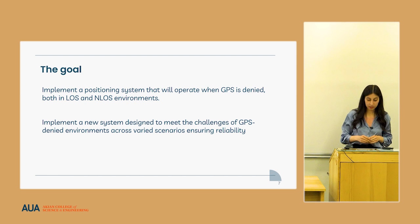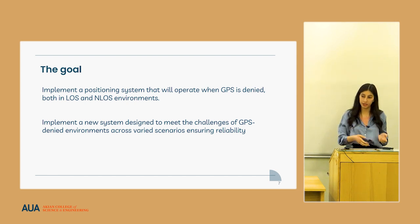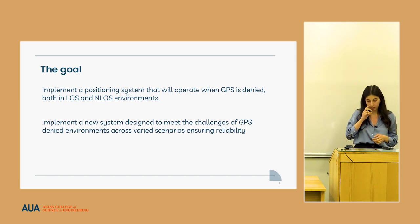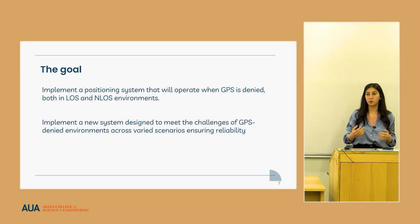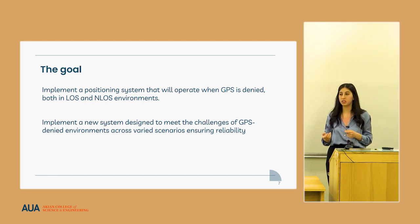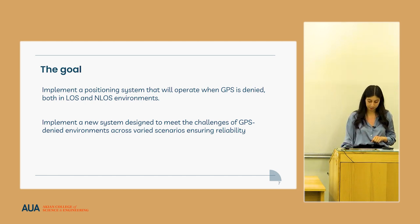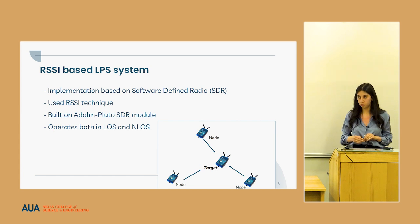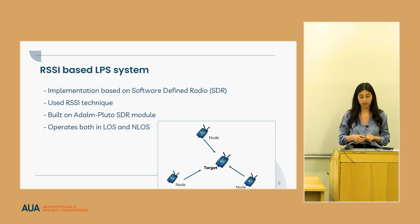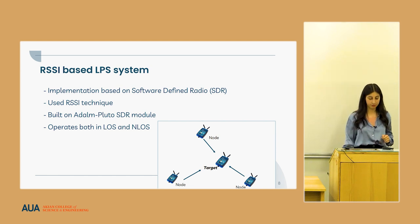The goal of the project was to implement a positioning system able to operate both in line-of-sight and non-line-of-sight environments. We don't want to compete with GPS — we want to create a system that provides positioning information when GPS is denied. We utilized software-defined radio modules as the basis for implementation, using the RSSI technique, and the system can operate in both line-of-sight and non-line-of-sight environments.